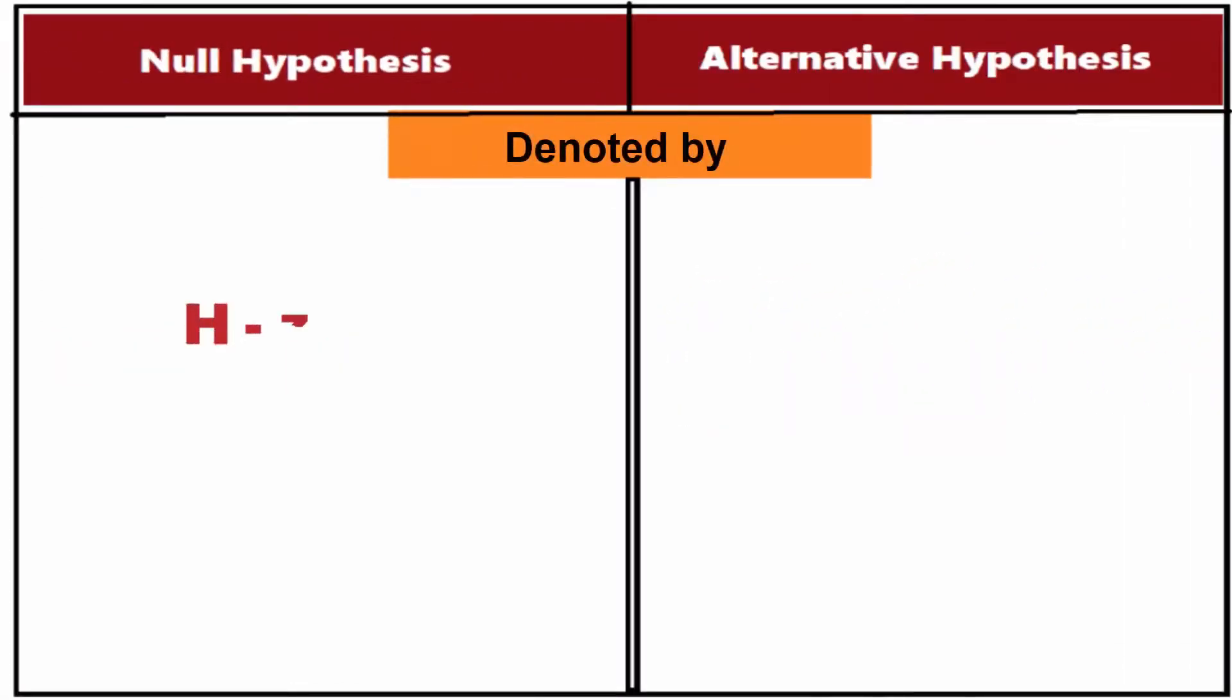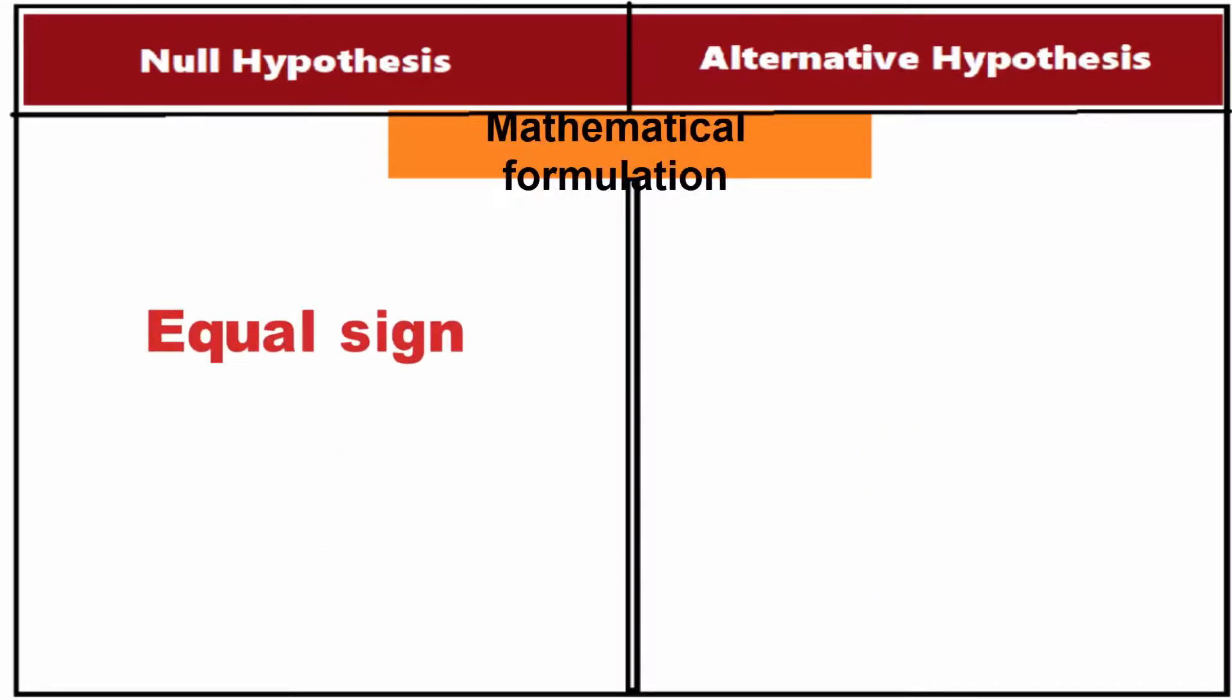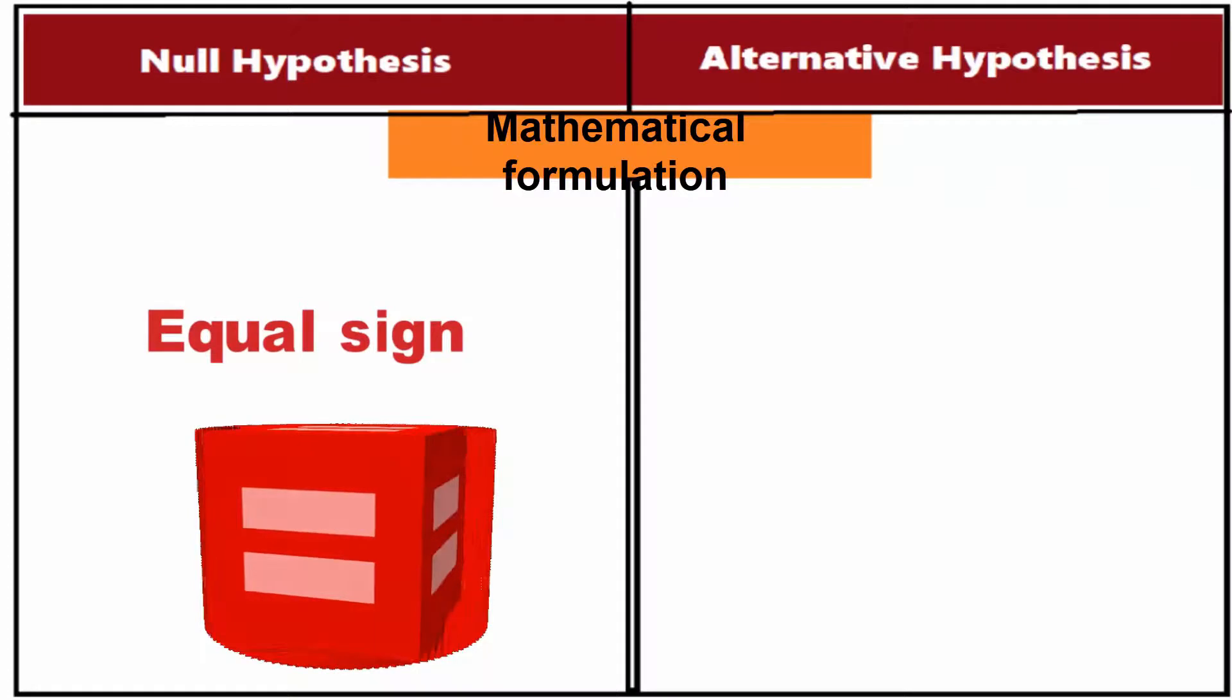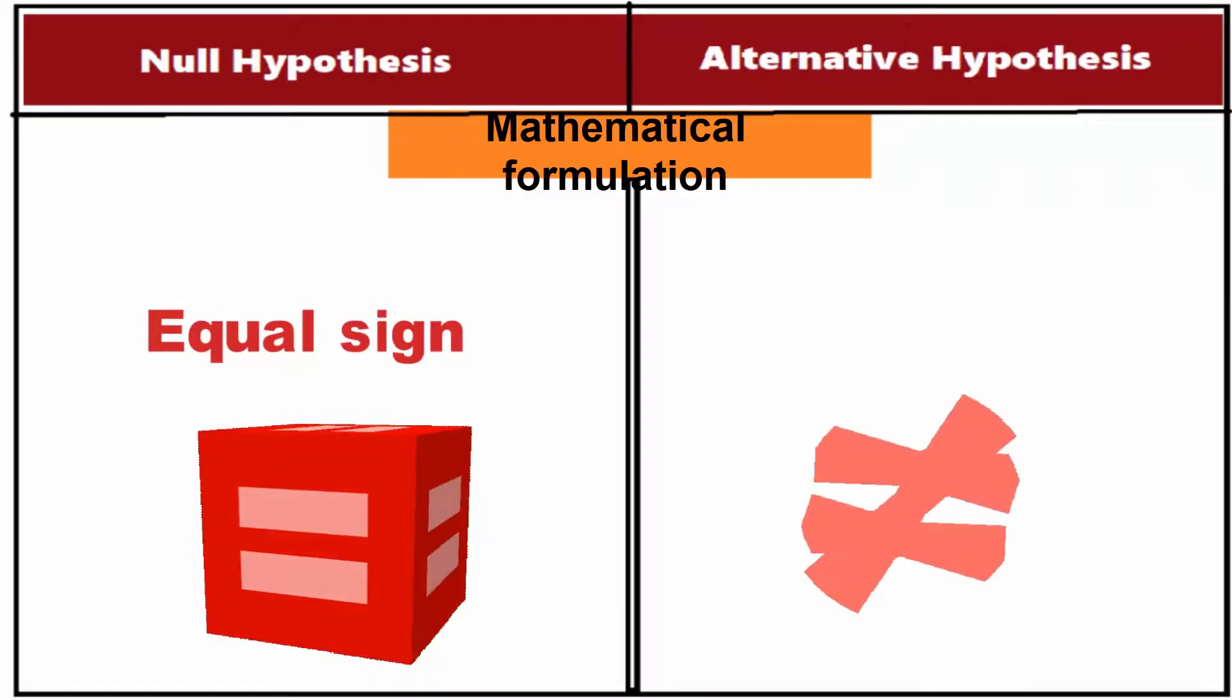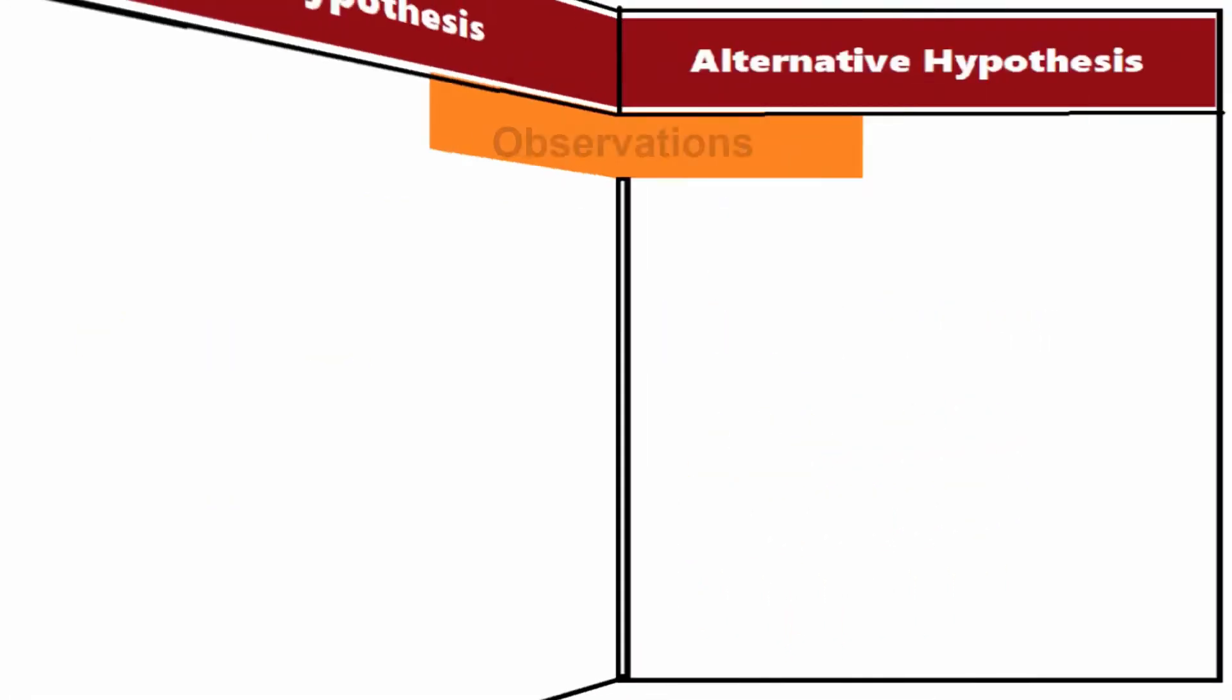Denoted by: A null hypothesis is labeled as H0, while an alternative hypothesis is represented by H1. Mathematical formulation: The mathematical formulation of a null hypothesis is an equal sign, but for an alternative hypothesis is a not equal to sign.